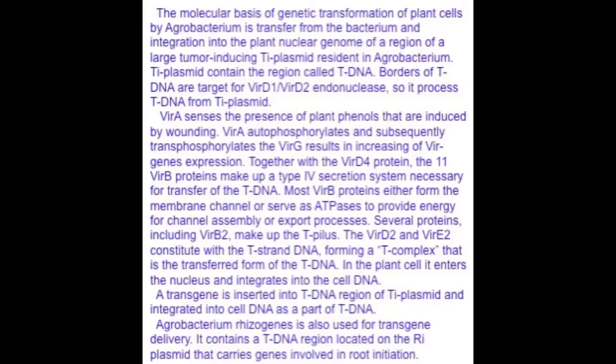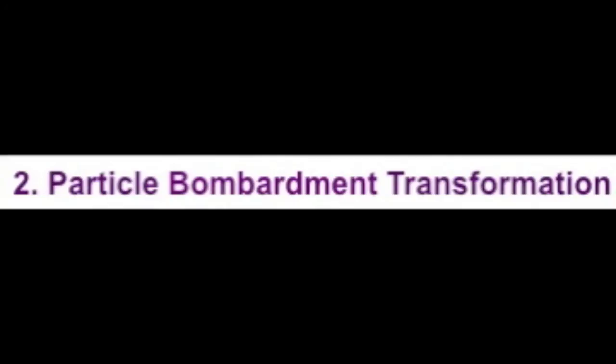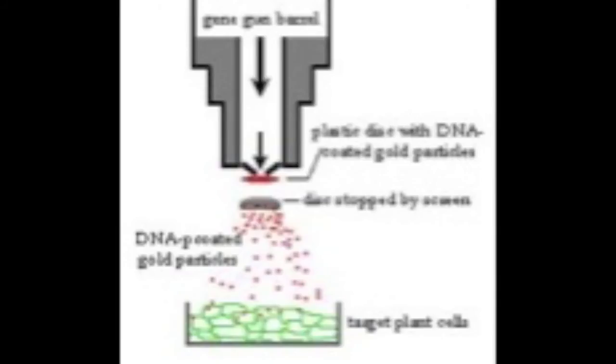Agrobacterium rhizogenes is also used for transgene delivery; it contains a T-DNA region located on the Ri plasmid that carries genes involved in root initiation. The second method of transgene delivery is particle bombardment transformation.